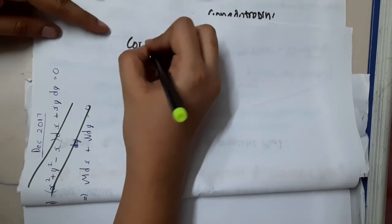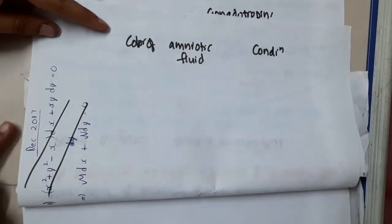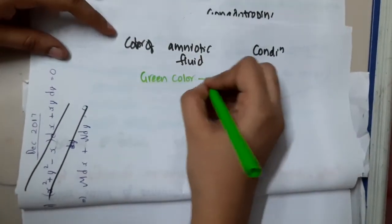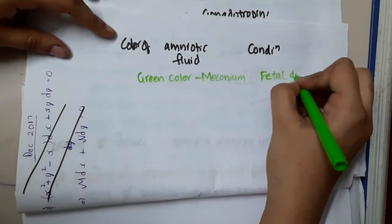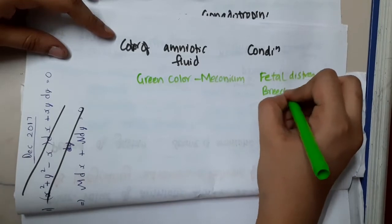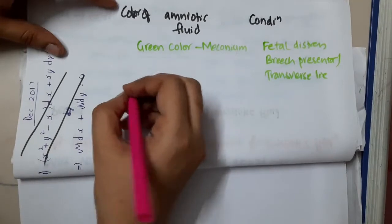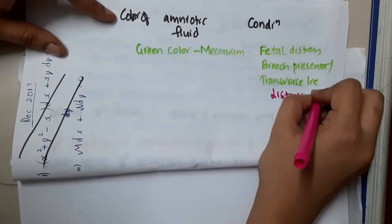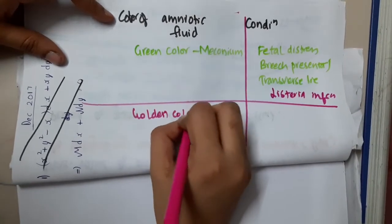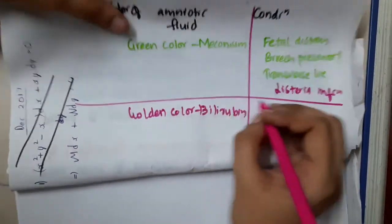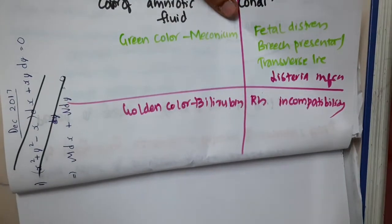Regarding color of amniotic fluid and condition: green color suggests meconium staining and is seen in fetal distress, breech presentation, transverse lie, and listeria infection. Golden colored amniotic fluid is due to bilirubin and is seen in RH incompatibility.